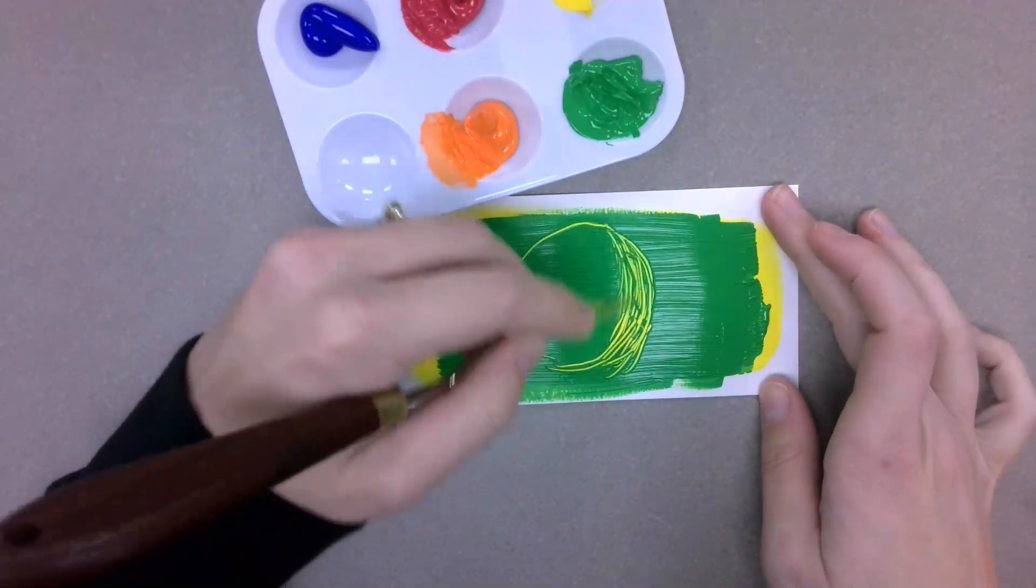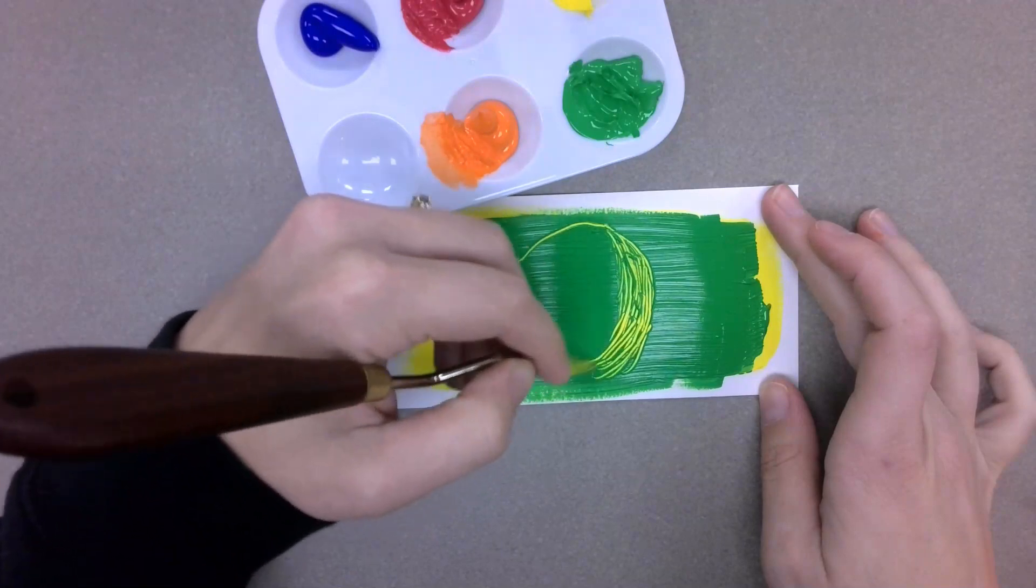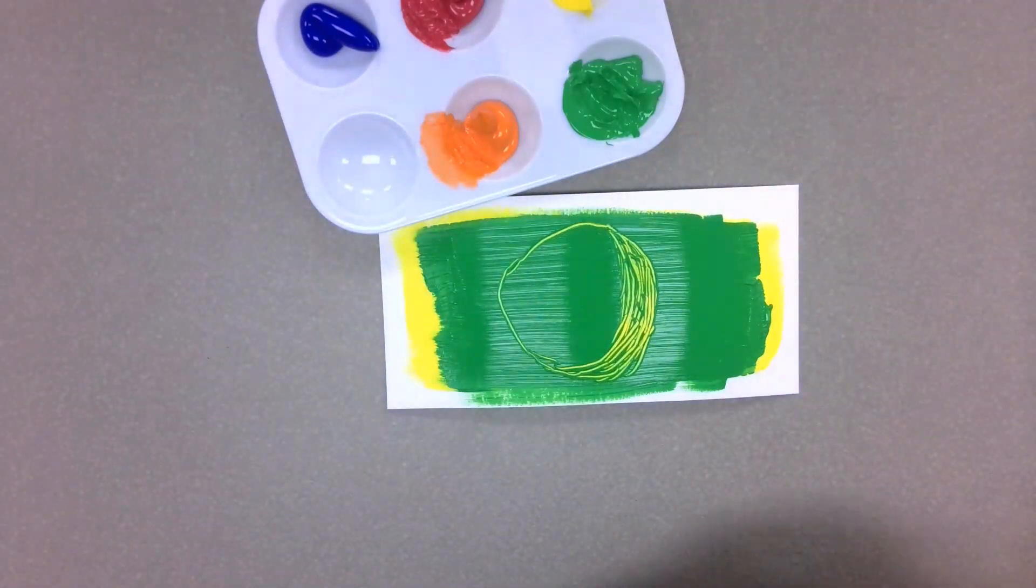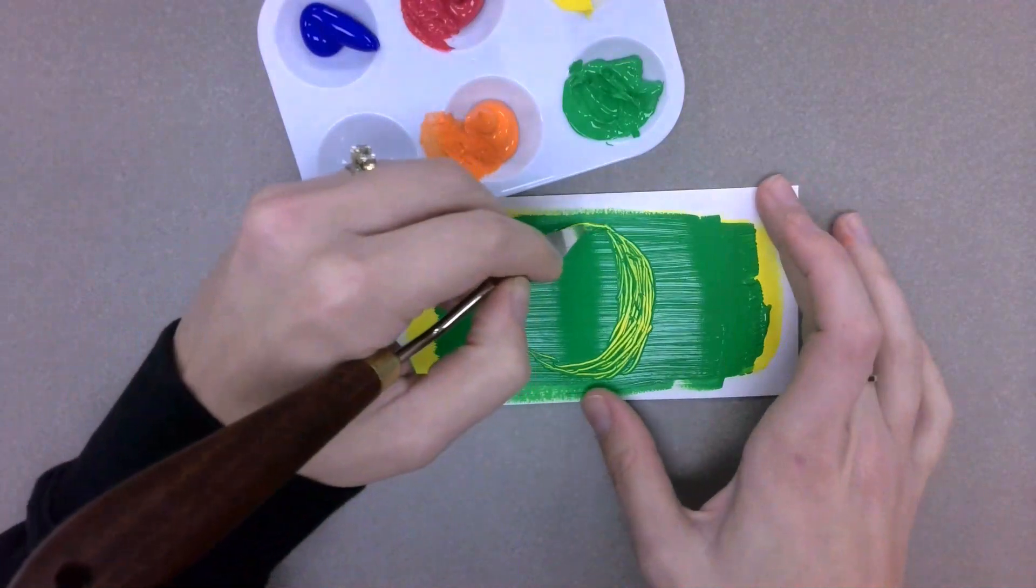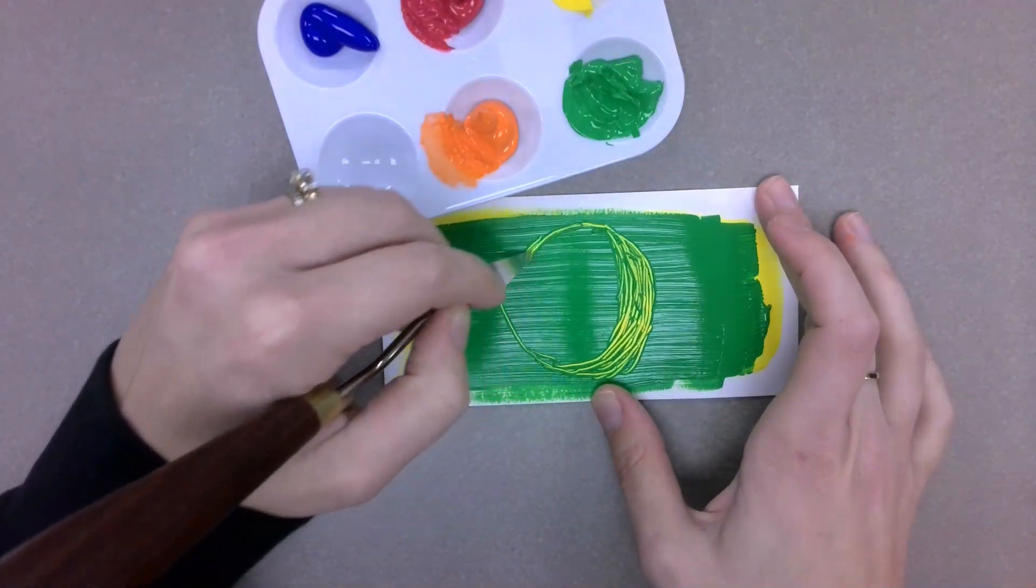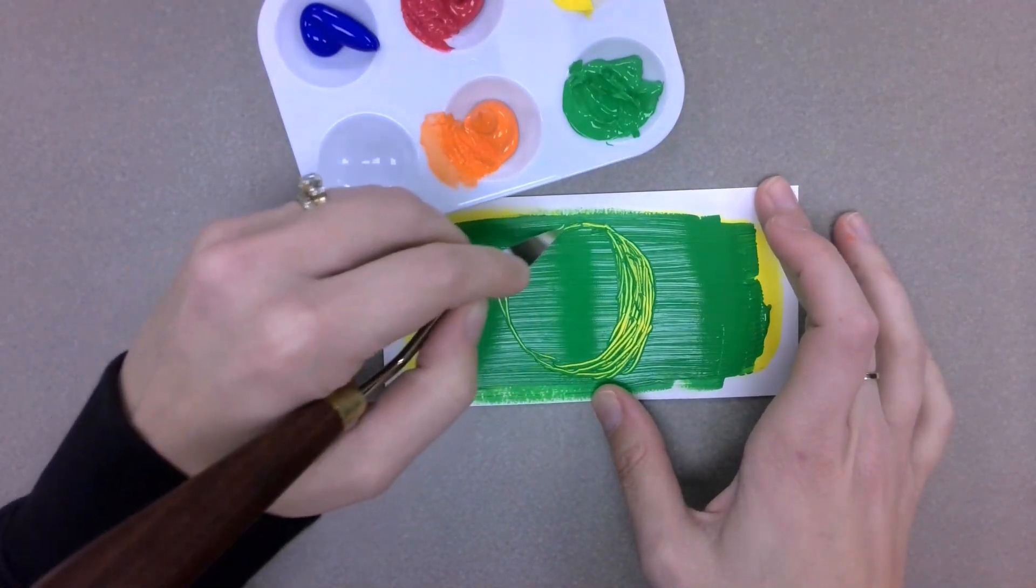...the more you scrape away, the more of the color that's underneath will show, which in my version is yellow. So it'll be lighter where I scrape away more.